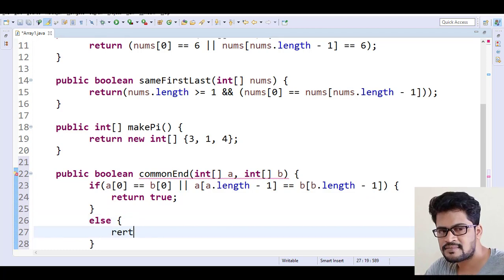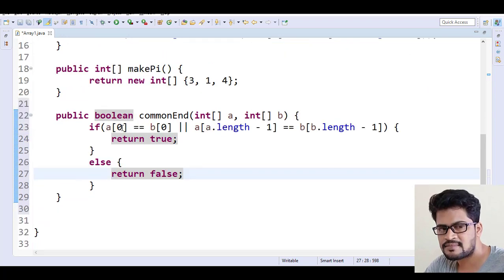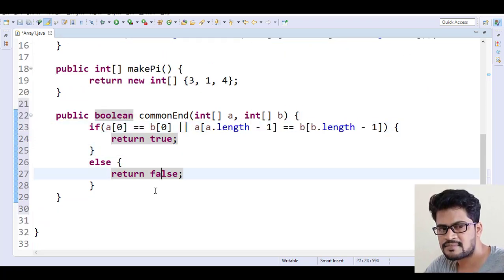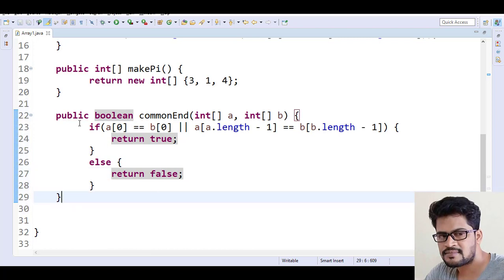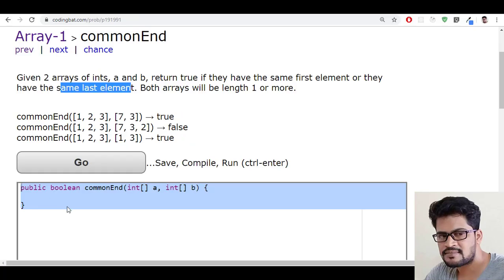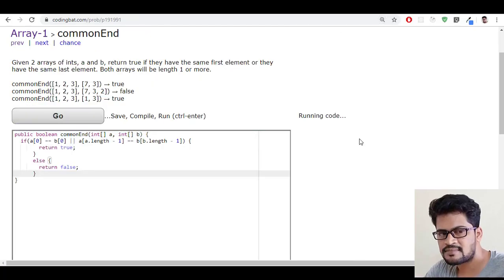So first element equal or last element equal then return true, otherwise return false. Let me save it. Let me copy this, go back to here, and paste it and click on Go.